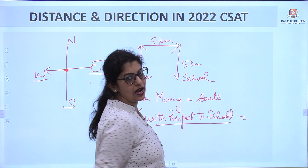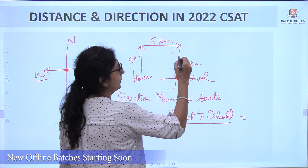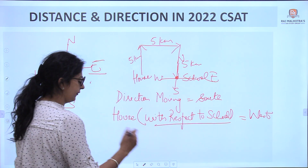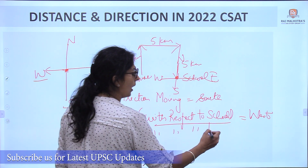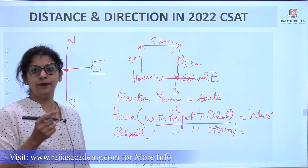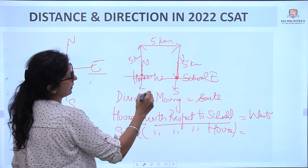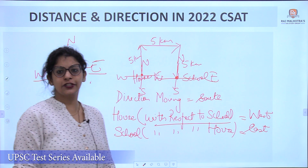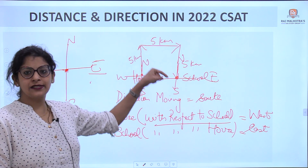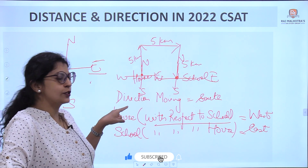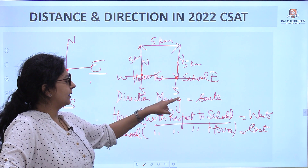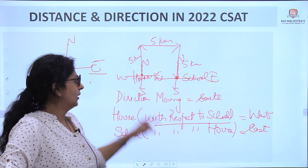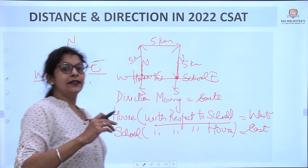To find the direction with respect to the school, we make the directional chart from the school — North, South, West, East. The house is in the West direction from the school. If the question is 'school is in which direction with respect to the house,' we make the chart from the house. North, South, West, East — the school is in the East direction from the house.